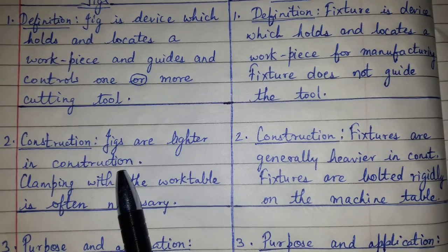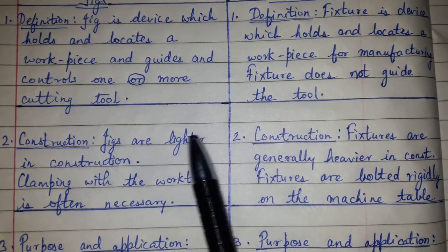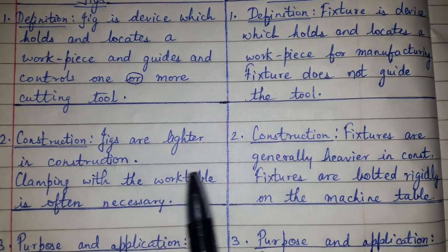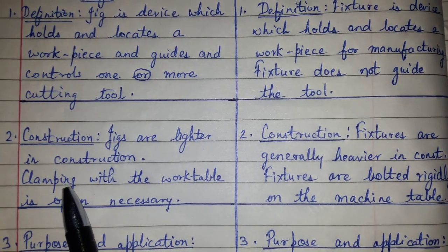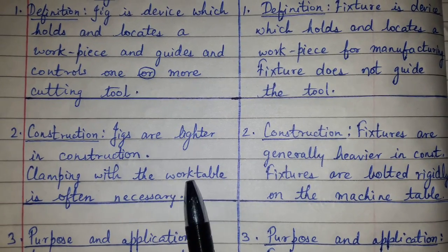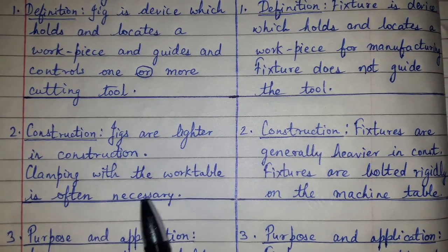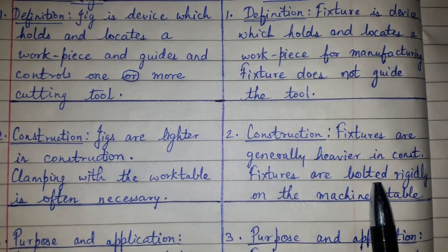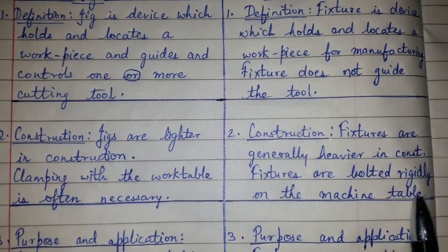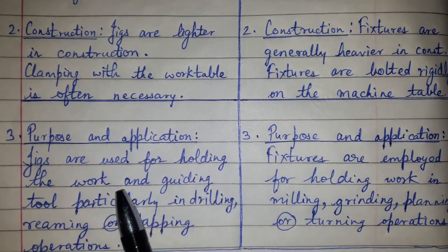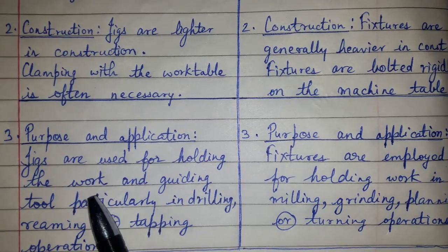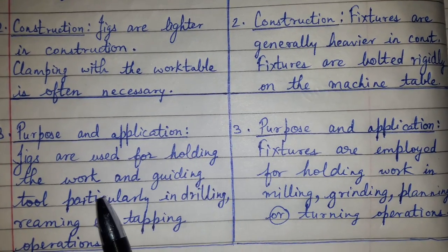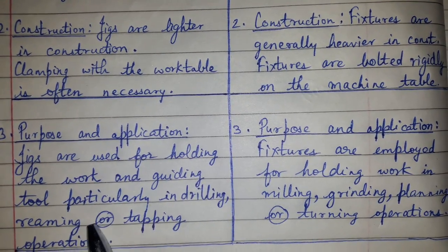Construction-wise, jigs are lighter in construction, while fixtures are generally heavier in construction. For jigs, clamping with the work table is often necessary, whereas fixtures are bolted rigidly on the machine table.